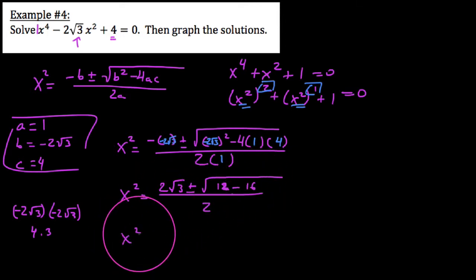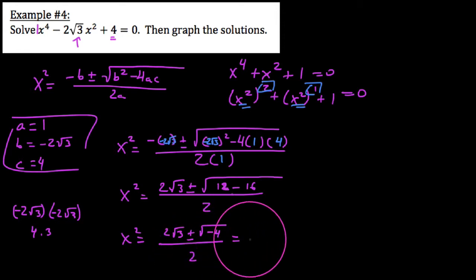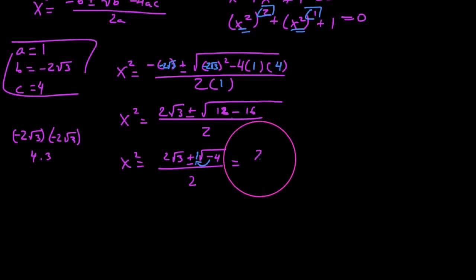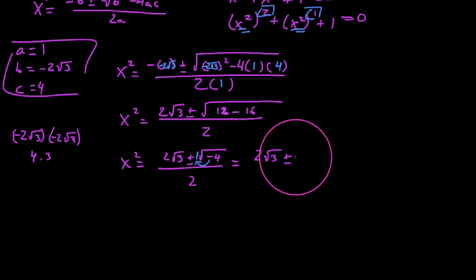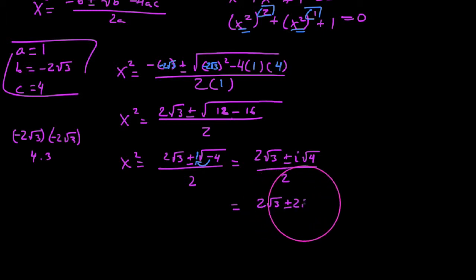The inside of this radicand — first whammy — is the fact that we're going to get a negative value. Because I'm taking an even root of a negative thing, I can put an i out front. So we're going to say 2√3 plus or minus i times the square root of 4, all over 2. Furthermore, this is 2√3 plus or minus 2i, because the square root of 4 is 2, all over 2.